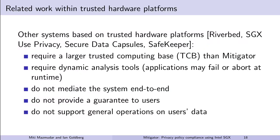Other systems based on trusted hardware platforms have been proposed for privacy policy compliance-related tasks, such as Riverbit, SGX Use Privacy, Secure Data Capsules, and Safe Keeper. These systems may have slightly different threat models and goals. Specifically, they have one or more of the following drawbacks: they may require a larger trusted computing base than Mitigator; they may require dynamic analysis tools; applications may fail or abort at runtime resulting in a degraded user experience; or they do not mediate the system end-to-end, do not provide a guarantee to users, or do not support general operations on users' data.